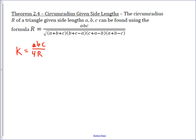The other important formula also finds the area of a triangle — we're calling the area K — and that is Heron's formula. Heron's formula is the square root of the semi-perimeter times the semi-perimeter minus A, times the semi-perimeter minus B, times the semi-perimeter minus C.